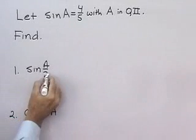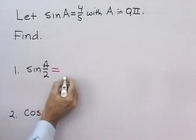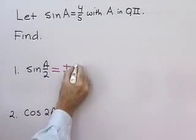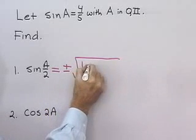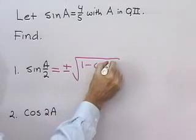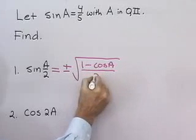Well, sine of A over 2, this is a half-angle formula. I've memorized it, and so I know it's plus or minus square root 1 minus cosine A, all divided by 2.